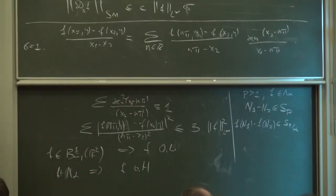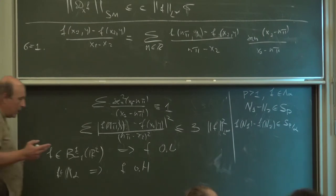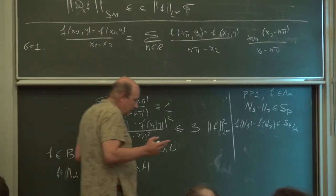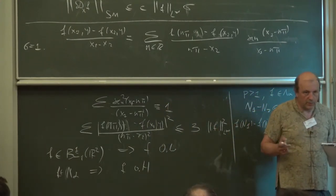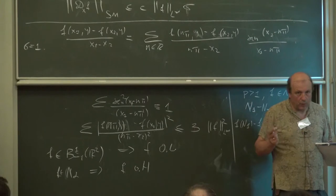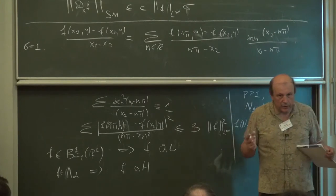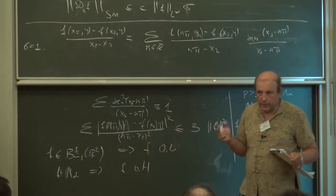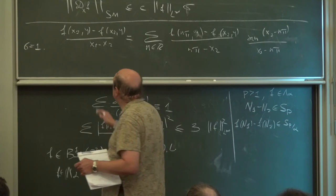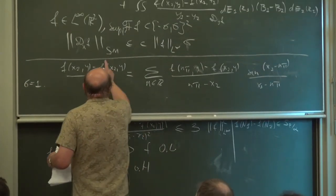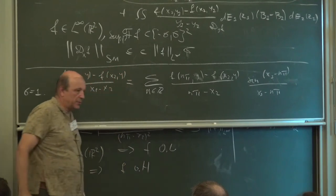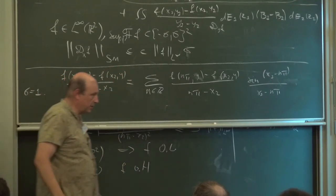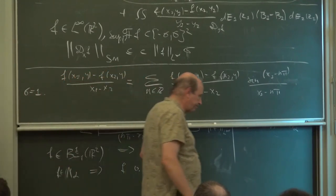In my joint paper with Fedor Nazarov, we found another method that also works for any collection of commuting self-adjoint operators, and we can obtain a similar inequality in terms of the exponential type sigma. But the method is completely different.